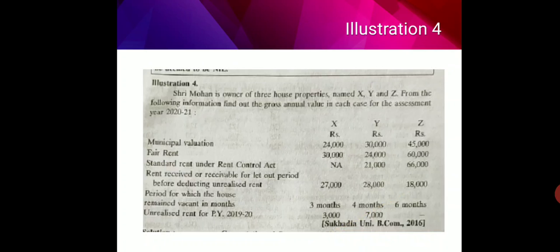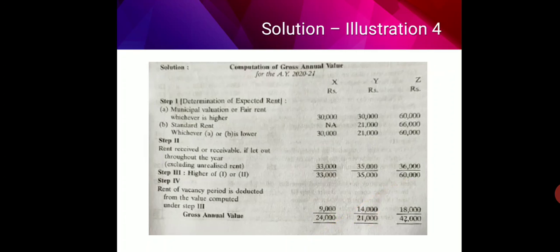Now let us look at this illustration. Shri Mohan is the owner of three house properties X, Y, and Z. From the following information, find out the gross annual value in each case for assessment year 2020-21. For property X: municipal valuation is 24,000, fair rent is 30,000, standard rent is not given, rent received for the let out period is 27,000, period vacant is three months, and unrealized rent for previous year 2019-20 was 3,000.